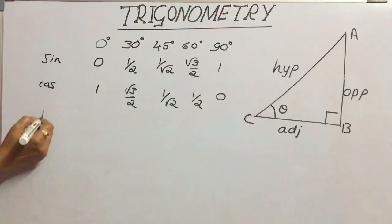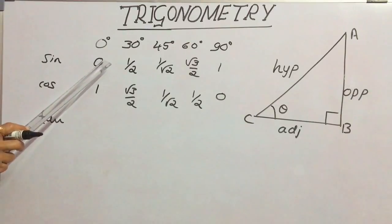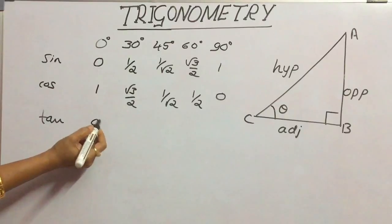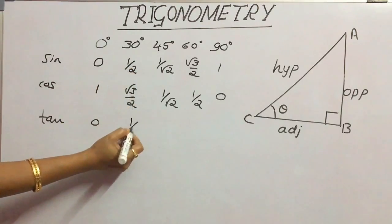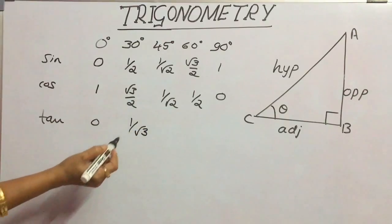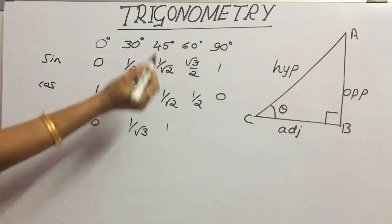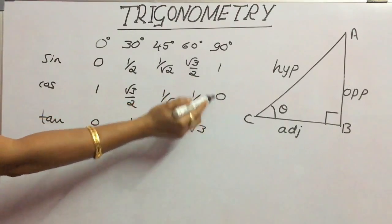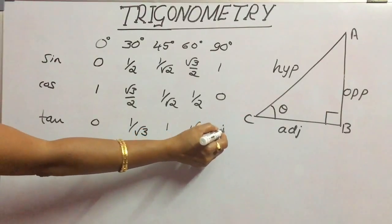Now let us consider tan values. To calculate tan, we divide the sin value by the cos value. Tan 0 is 0, tan 30 is 1/√3, tan 45 is 1, tan 60 is √3, and tan 90 is 1/0, which is infinity — that means indeterminate.